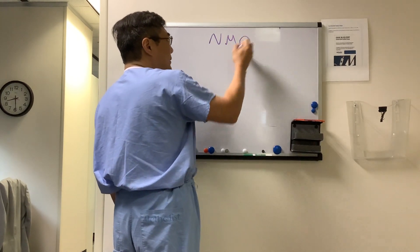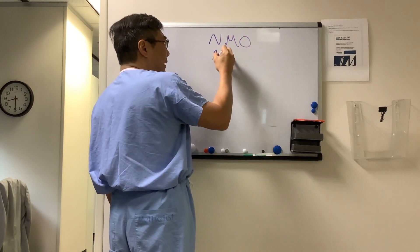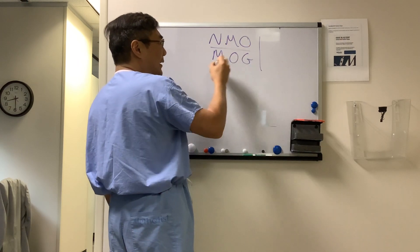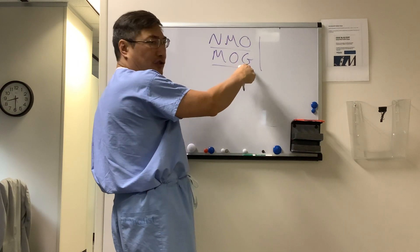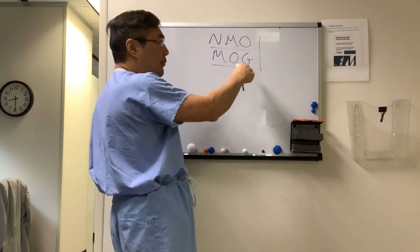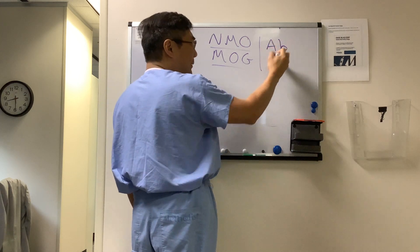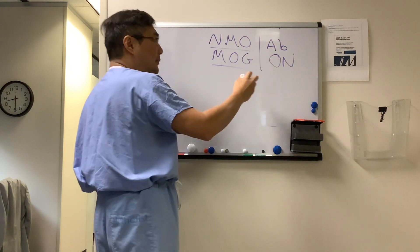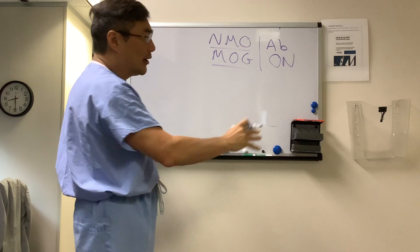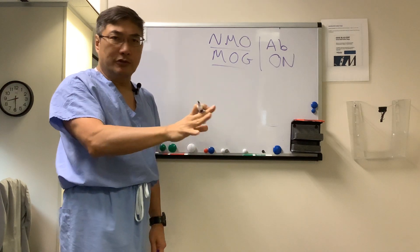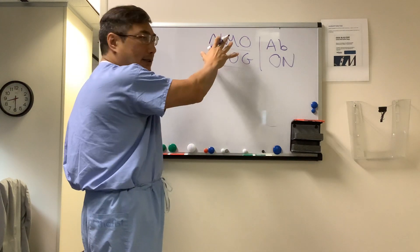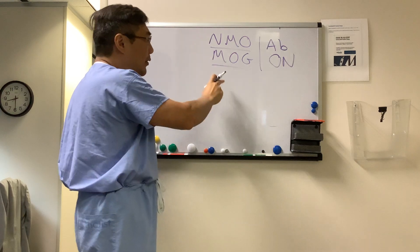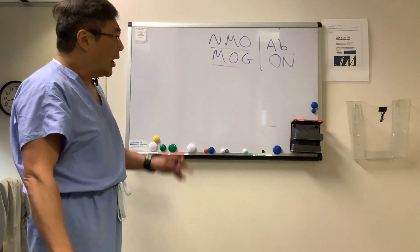Someone wanted to know about treatment decision-making in NMO and MOG, which are neuromyelitis optica and myelin oligodendrocytic glycoprotein. These are antibody-mediated forms of optic neuritis, but of course they can cause transverse myelitis, area postrema, brainstem, and diencephalopathy syndromes in NMO, and can look like ADEM in MOG.